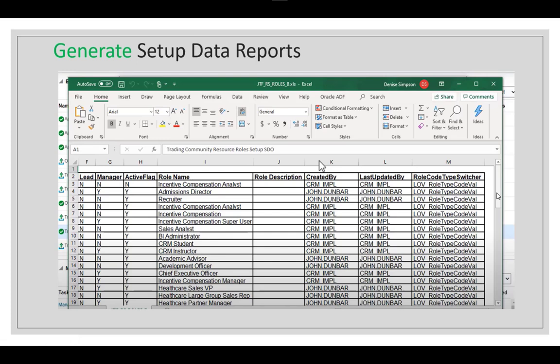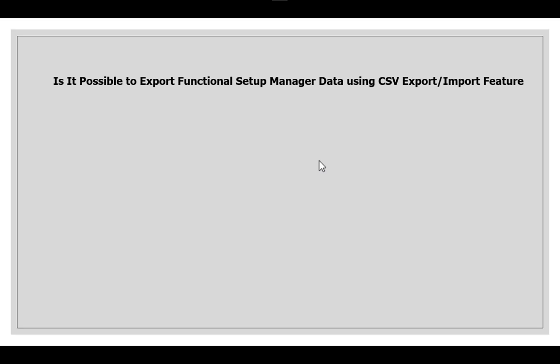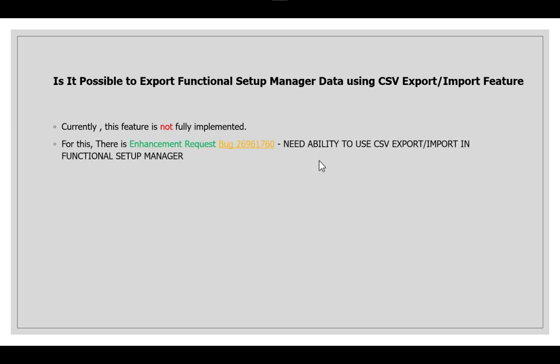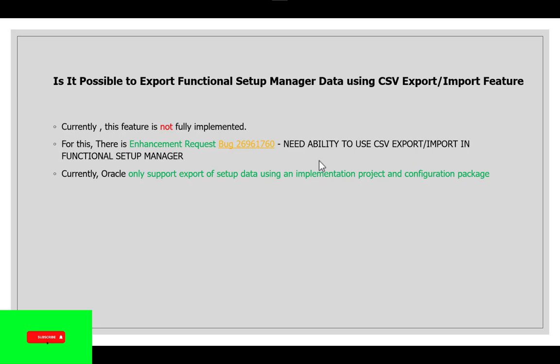One common question: is it possible to import Functional Setup Manager data using CSV? Currently this feature is not fully implemented. There is an enhancement request to enable CSV export and import in Functional Setup Manager. Until that enhancement is implemented, you must use configuration packages as demonstrated — exporting from one instance and importing to another.